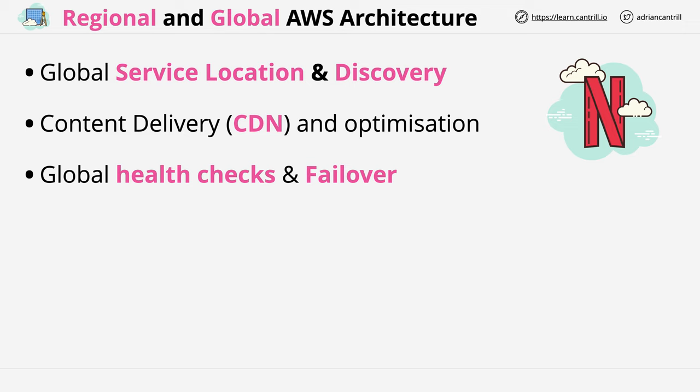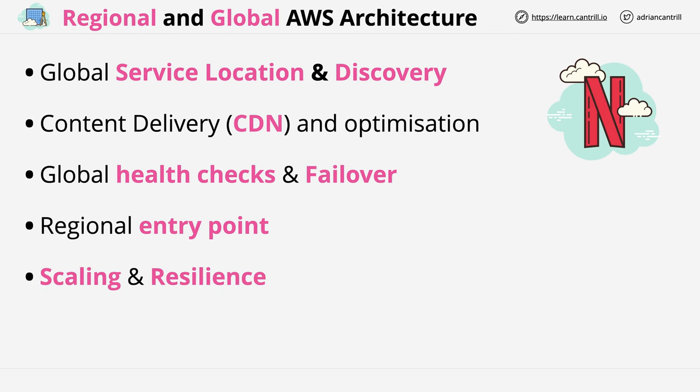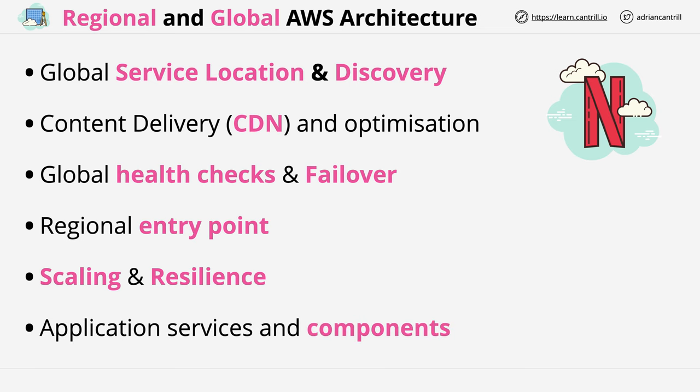Next, we have regional components, starting with the regional entry point. And then we have regional scaling and regional resilience, and then the various application services and components. As we go through the rest of the course and look at specific architectures, I want you to think about them in terms of global and regional components — which parts can be used for global resilience and which parts are local only.